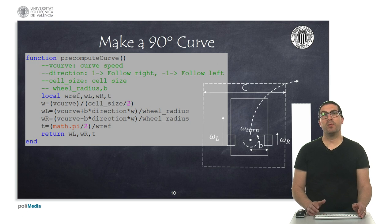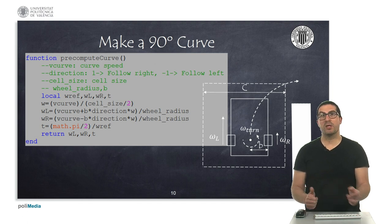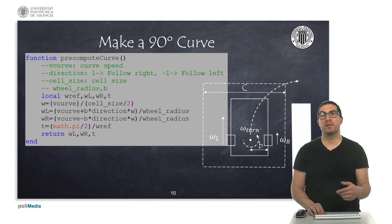Similarly, we can pre-compute the values of the angular wheel speeds to make a curve, a 90-degree curve. In this case, we will have to provide both the speed we want to make this curve and also the direction, as well as some constructive parameters of the robot and the cell size in this case.